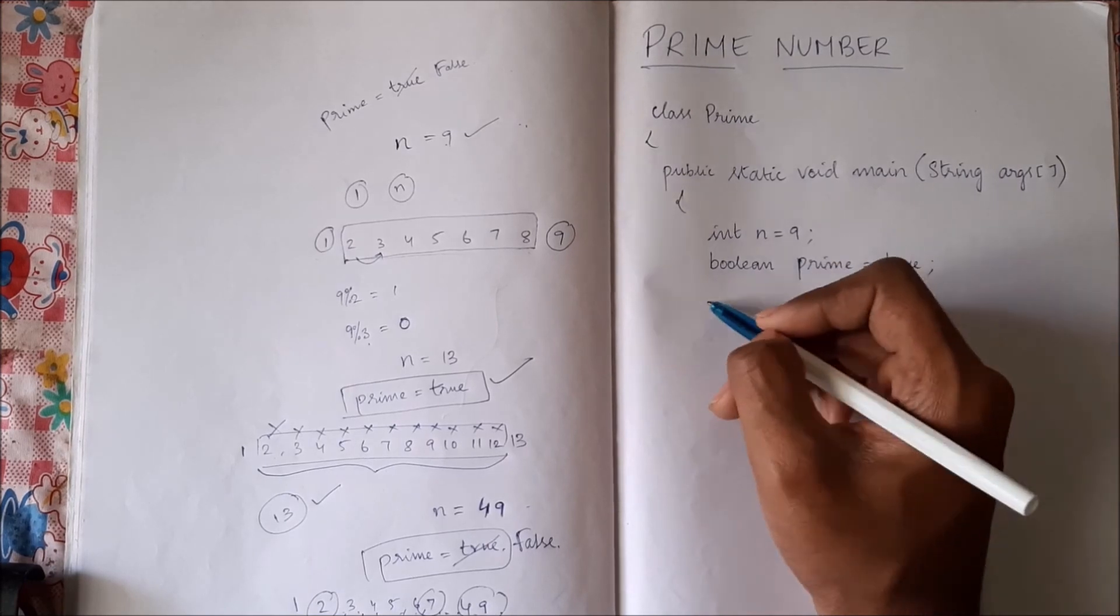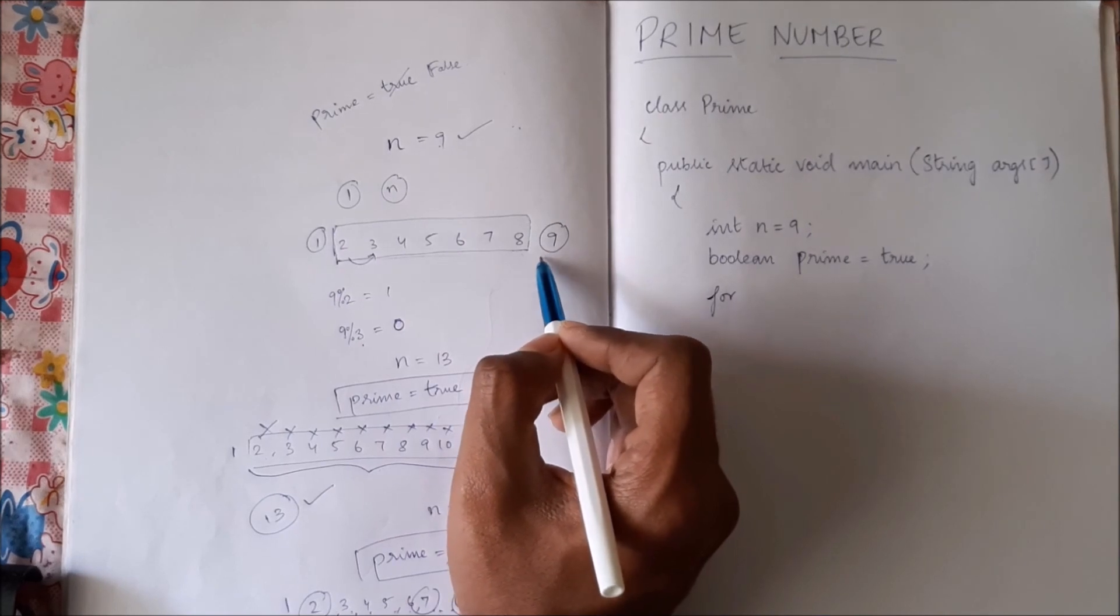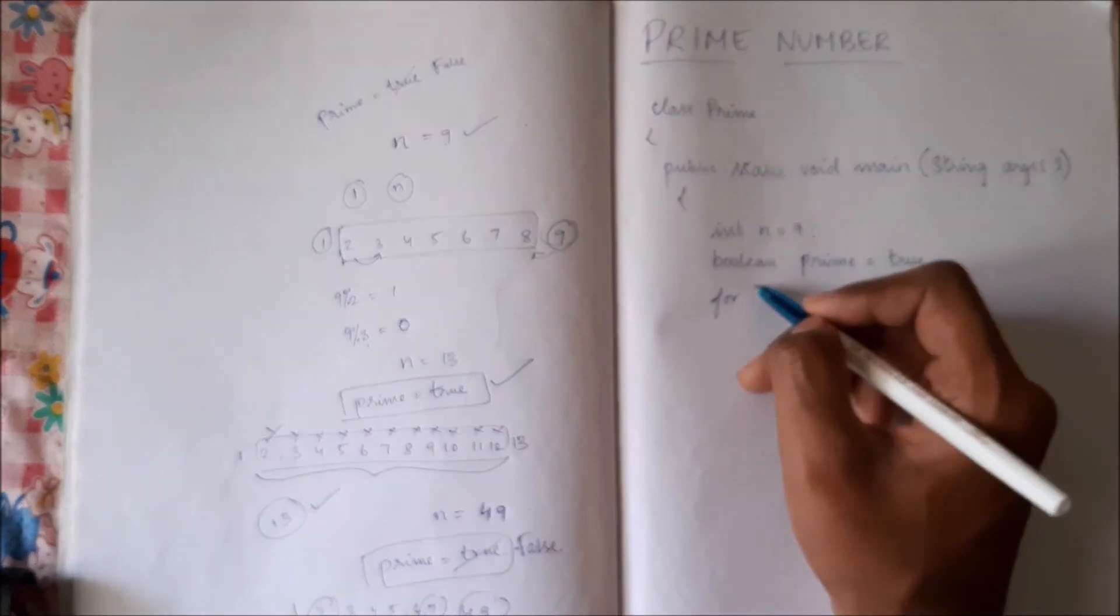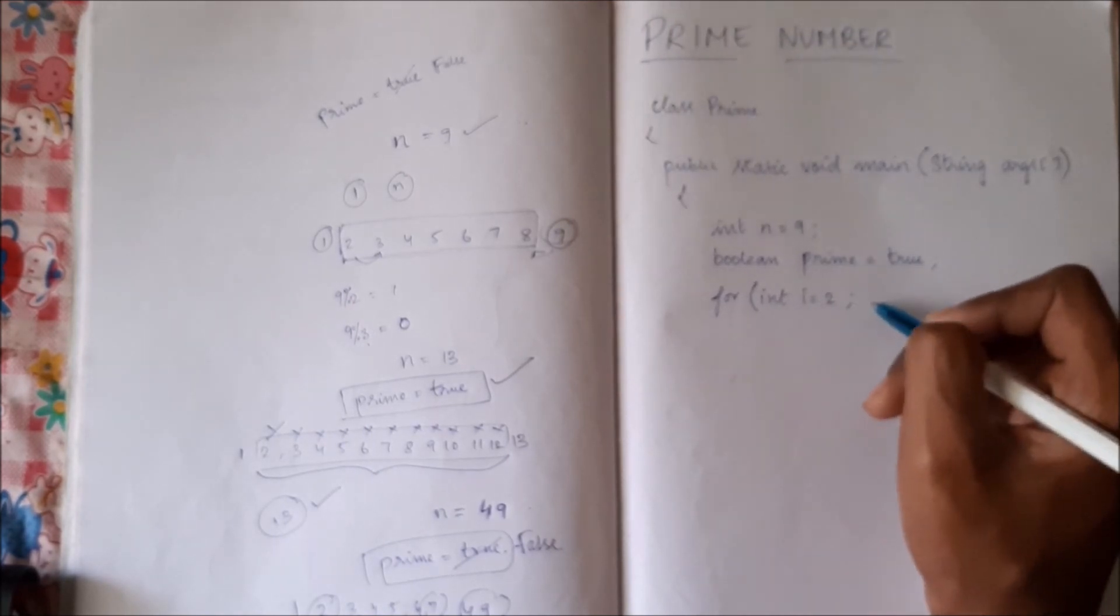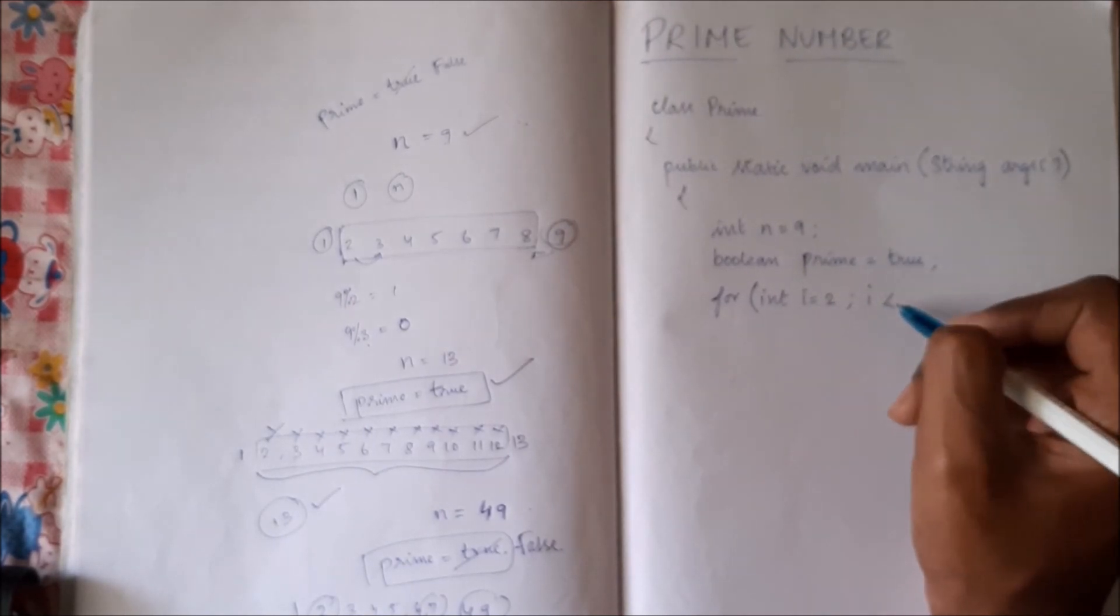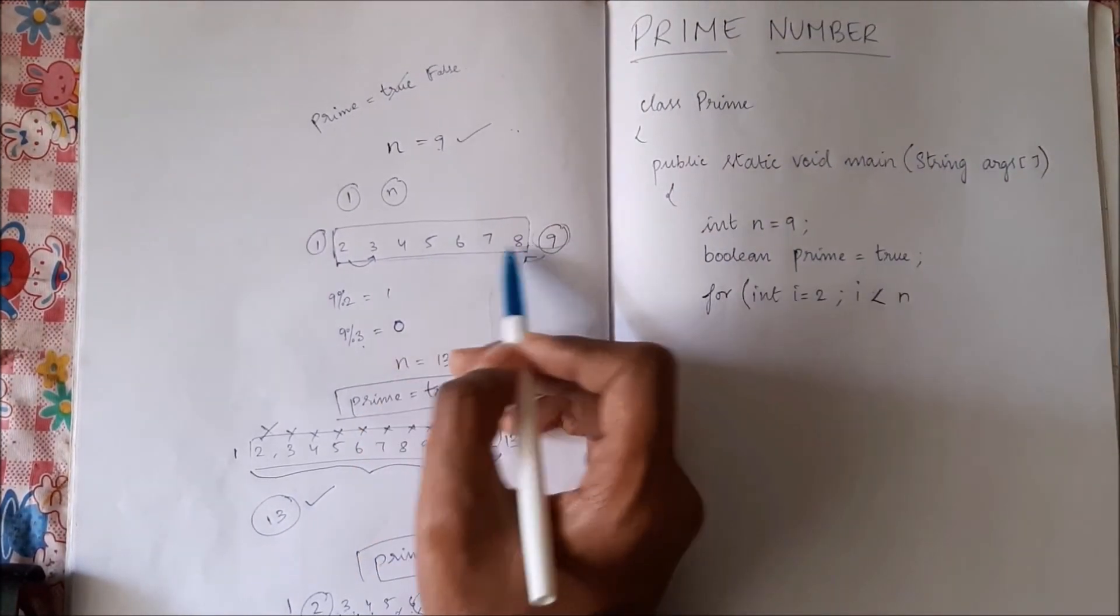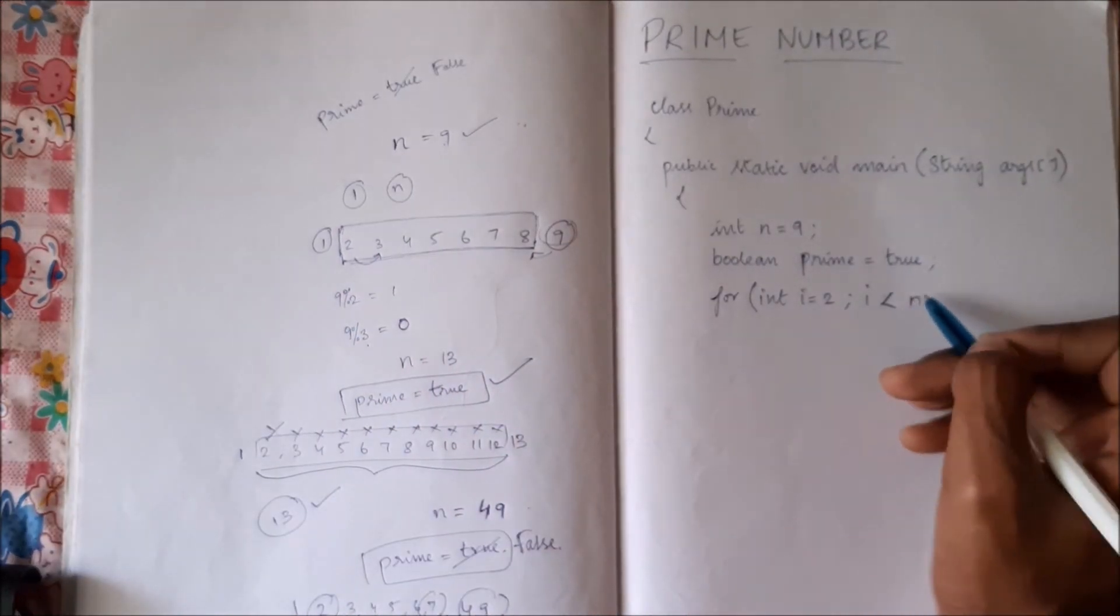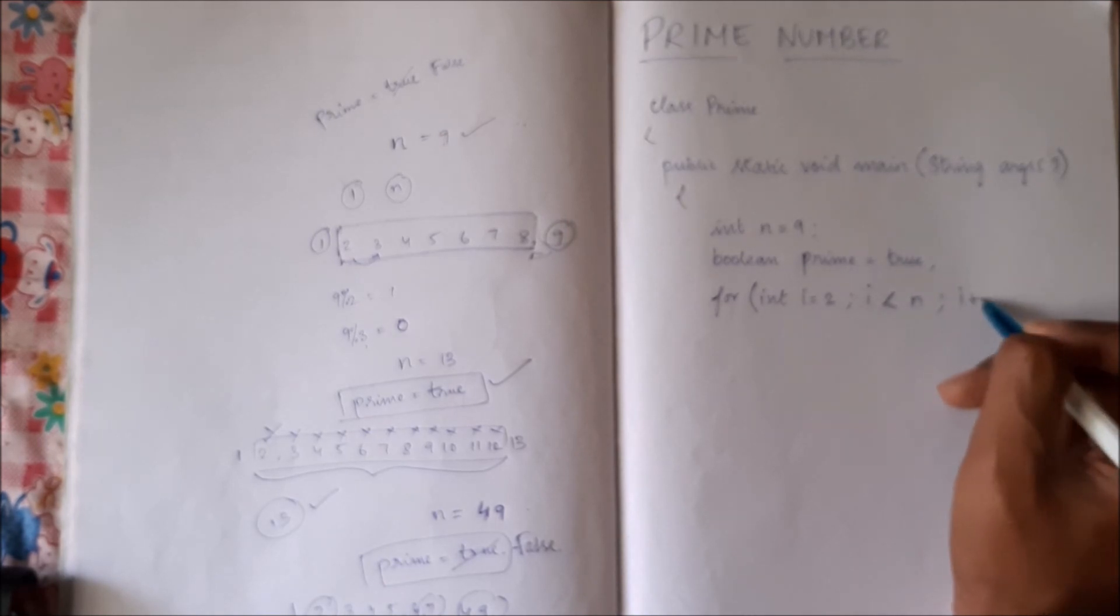Now we will run a loop from 2 to 1 number less than n. So int i equal to 2, i should be less than n. n was 9, we checked from 2 to 8. So i is less than n and then i plus plus.